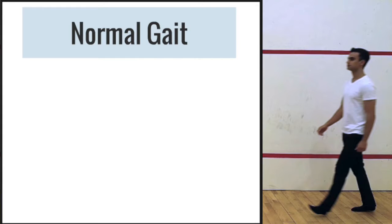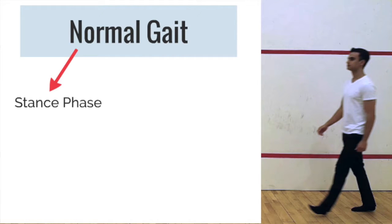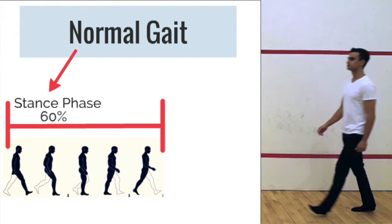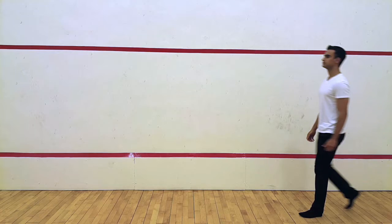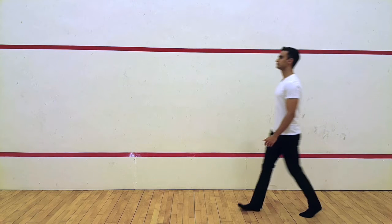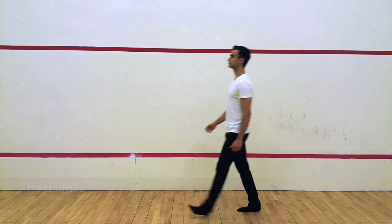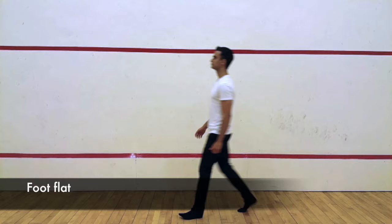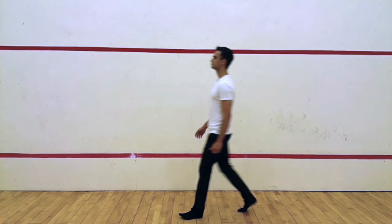Normal gait consists of two phases: the stance phase and the swing phase. The stance phase makes up approximately 60% of the normal gait sequence. It starts as soon as a portion of the foot makes contact with the ground and continues as long as that portion of the foot remains in contact with the ground. It begins with heel strike, when the heel makes contact and the foot is dorsiflexed. Following heel strike, the full foot makes contact with the ground, achieved by relaxation of the dorsiflexors of the foot.